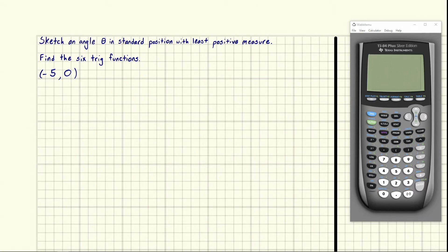Eric Burgess here. We're told to sketch an angle theta in standard position with least positive measure and then to find the six trig functions, and we're given a coordinate negative five comma zero.